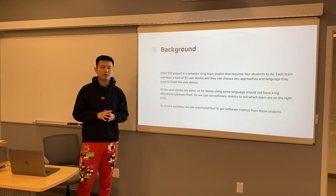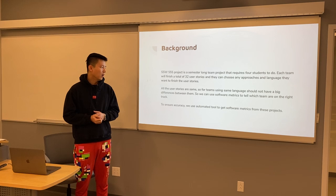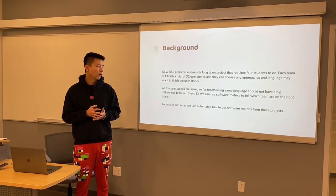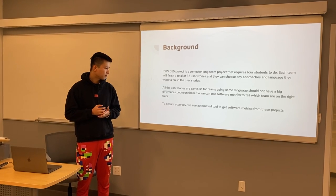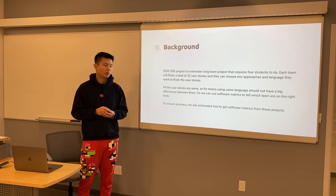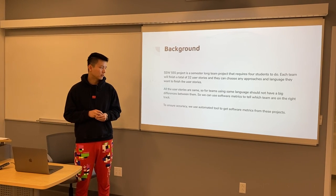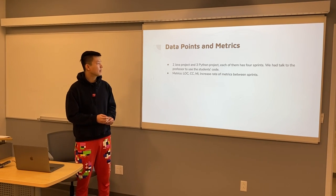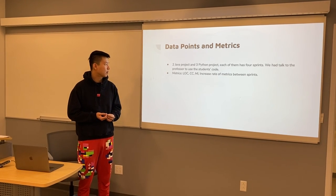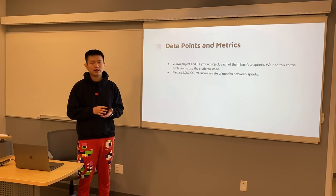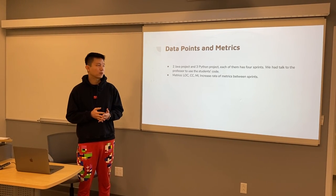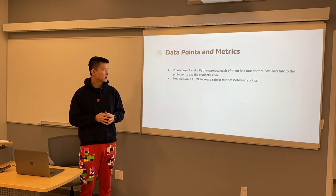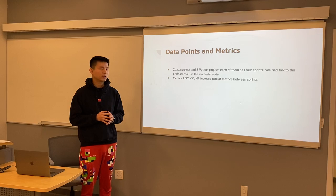We can use the software metrics to tell which teams are on the right track. To ensure accuracy, we will use automated tools to measure the software metrics. We already gained data from 5 projects: 2 of them are Java products and 3 of them are Python products. The metrics are LOC, CC, and MI, and also the increased rate of metrics between different sprints.